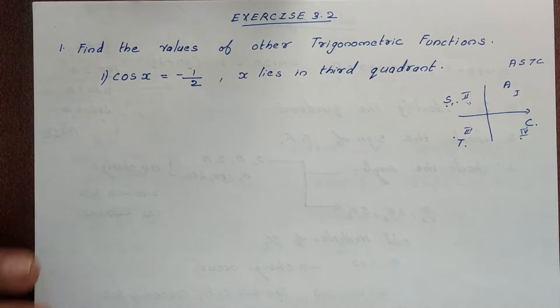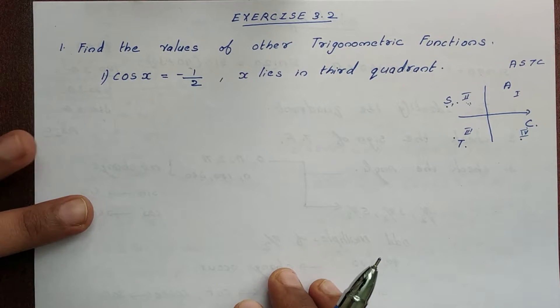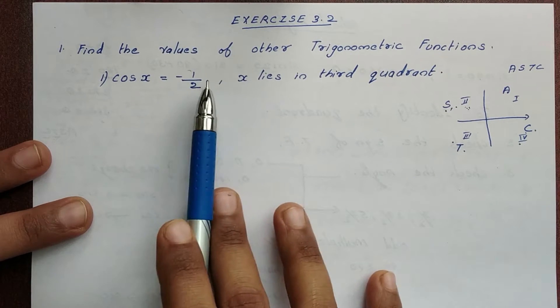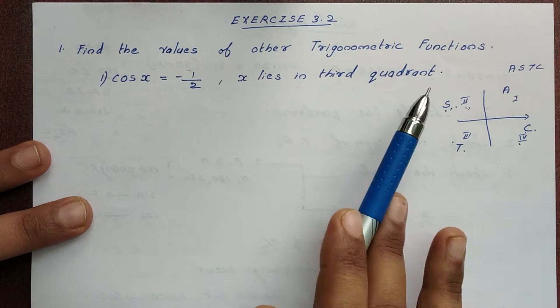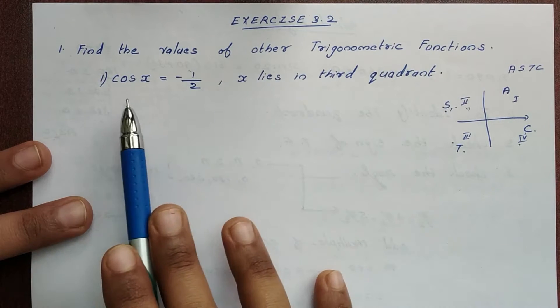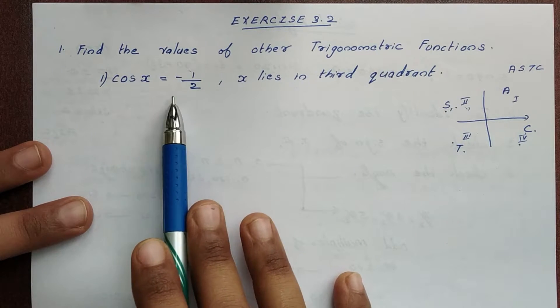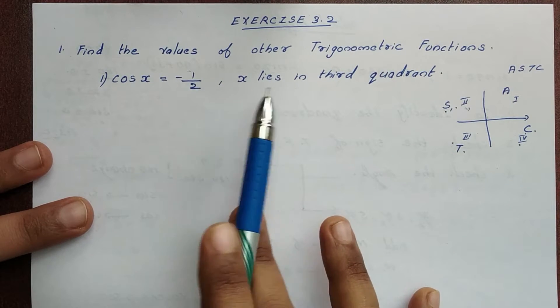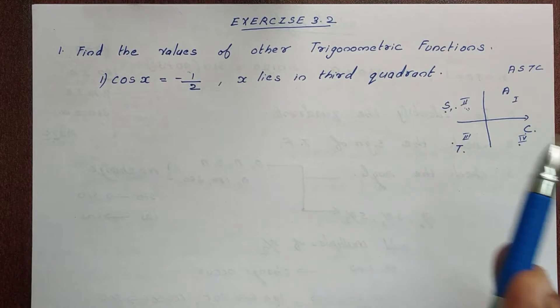We have problems. First question: Find the values of other trigonometric functions. First one: cos x is equal to minus 1 by 2, and x lies in the 3rd quadrant.